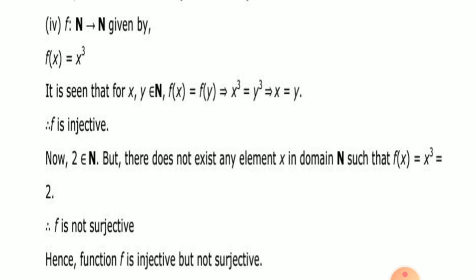Next, f from N to N given by f(x) = x³. For every x, y belonging to N, f(x) = f(y) implies x³ = y³. Taking cube roots on both sides gives x = y. So f is injective. However, 2 belongs to N but there does not exist any element x in N such that f(x) = x³ = 2. It is not possible, so f is not surjective. Therefore f is injective but not surjective.